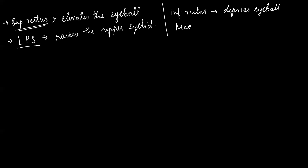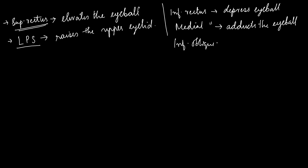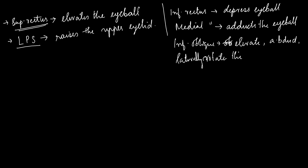The medial rectus adducts the eyeball. The inferior oblique is an important muscle — it elevates, abducts, and laterally rotates the eyeball.